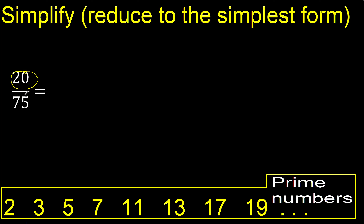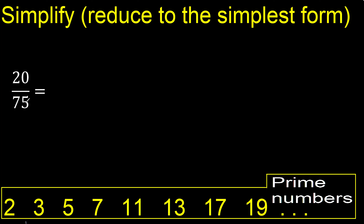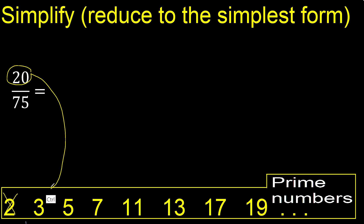Can 20 and 75 be divided by 2? No, because here the last digit is not even — cannot be divided by 2. Cannot be divided by 3.